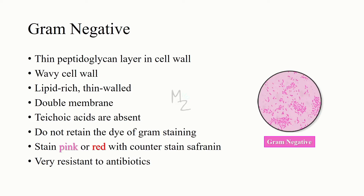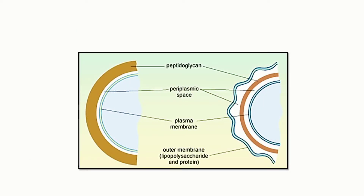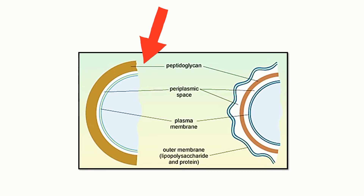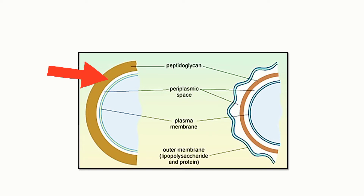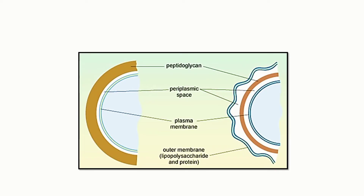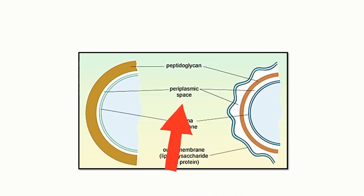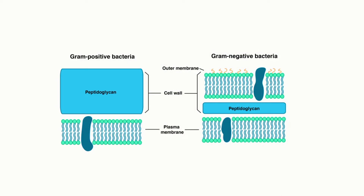Gram negative bacteria are very resistant to antibiotics. Now let's look at both bacteria together. Gram negative is on the right side and gram positive is on the left side. Look at the cell wall: gram positive has a straight, smooth cell wall while gram negative has a wavy cell wall. Gram positive has a thick peptidoglycan layer compared to gram negative's thin one. Gram positive has a single membrane while gram negative has two — an outer membrane and an inner one. Both have their periplasmic space and cytoplasm.